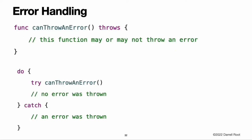Error handling. You use error handling to respond to error conditions your program may encounter during execution. In contrast to optionals, which can use the presence or absence of a value to communicate success or failure of a function, error handling allows you to determine the underlying cause of failure and, if necessary, propagate the error to another part of your program. When a function encounters an error condition, it throws an error. That function's caller can then catch the error and respond appropriately. A function indicates that it can throw an error by including the throws keyword in its declaration. When you call a function that can throw an error, you prepend the try keyword to the expression. Swift automatically propagates errors out of their current scope until they are handled by a catch clause. A do statement creates a new containing scope which allows errors to be propagated to one or more catch clauses.